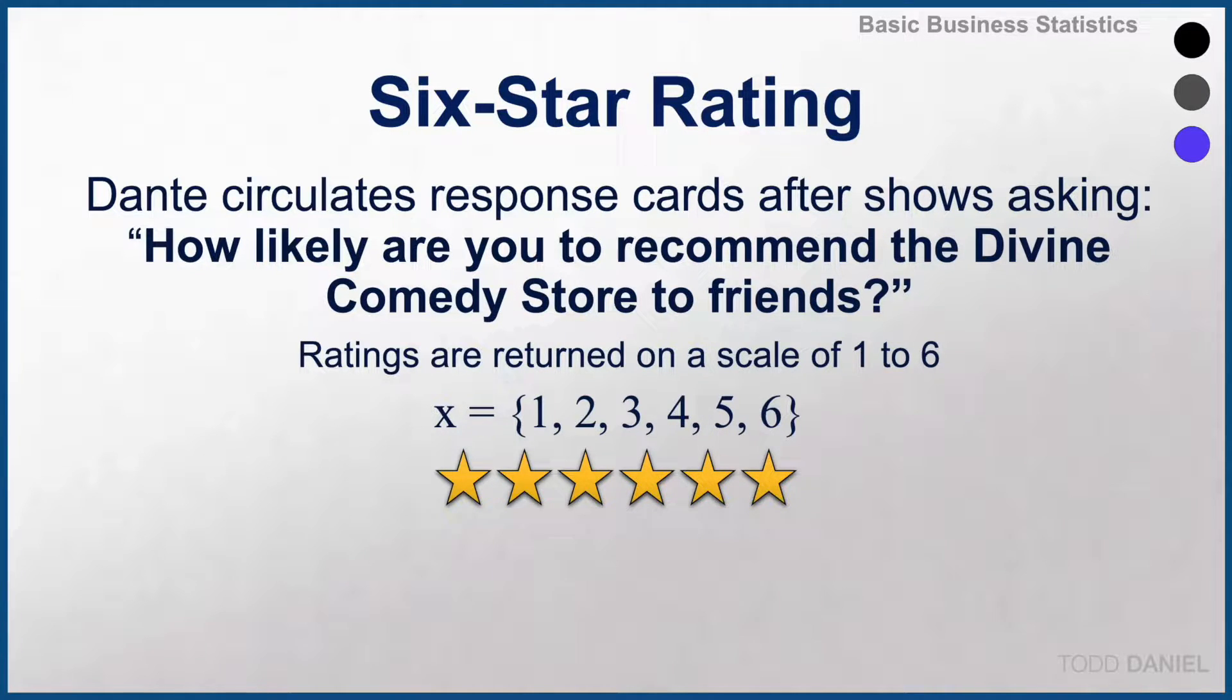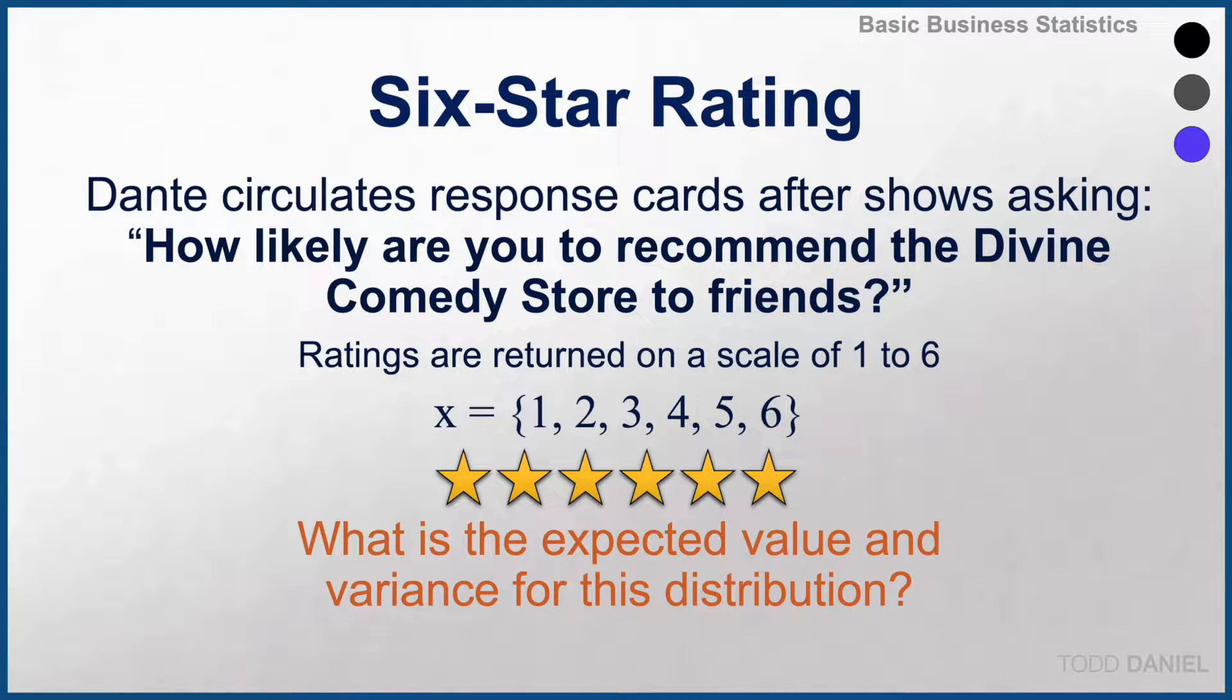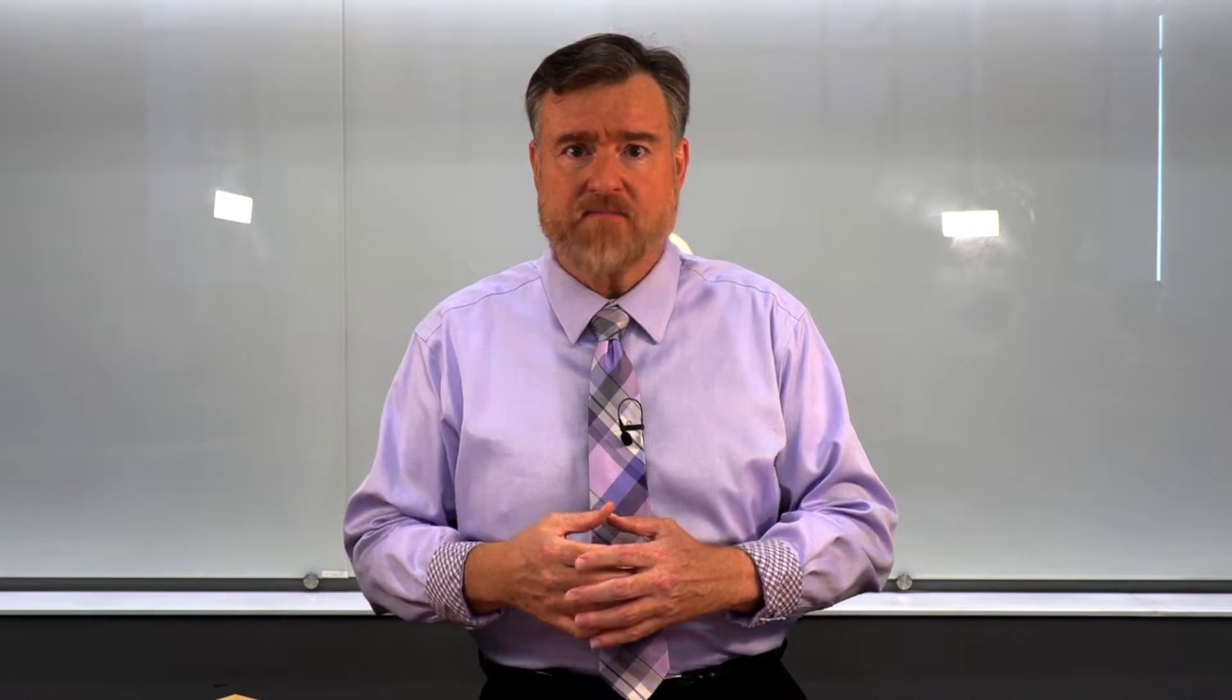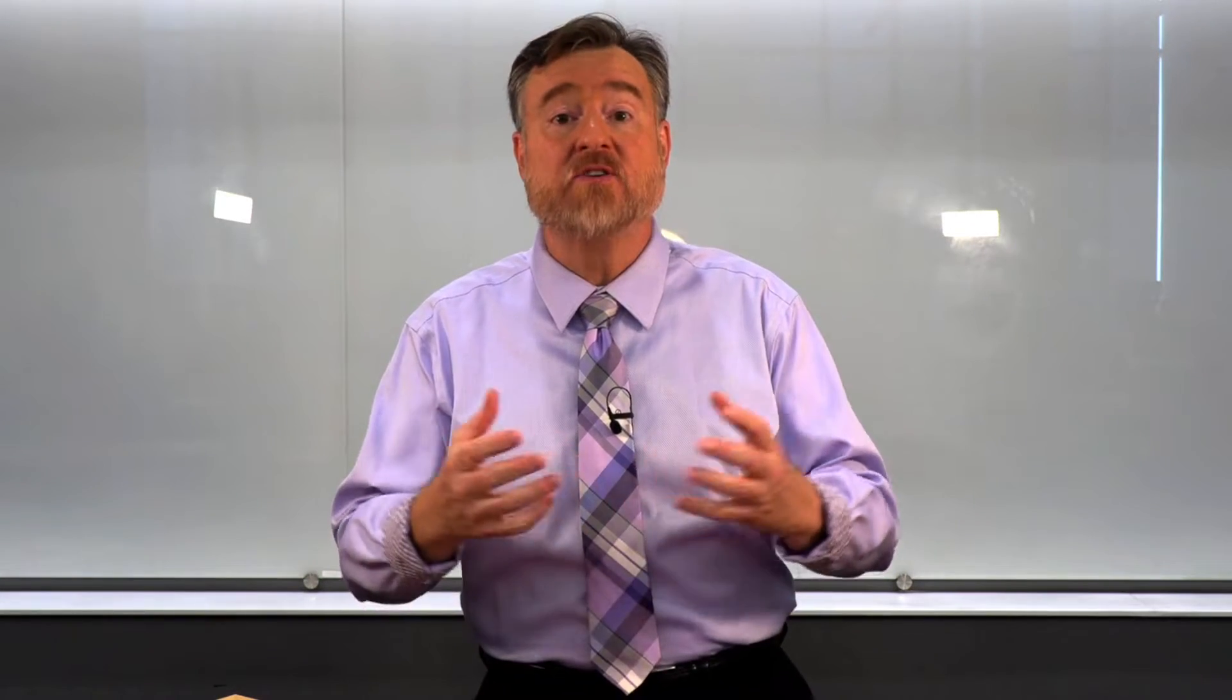What we want to know is, what is the expected value and the variance for this distribution? Now this might seem a little confusing. How can we get the average of stars, much less the variability or the standard deviation of a number of stars assigned?